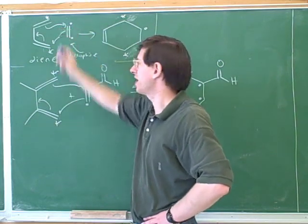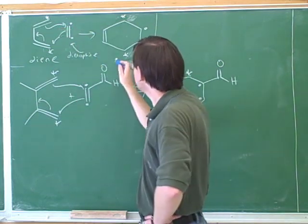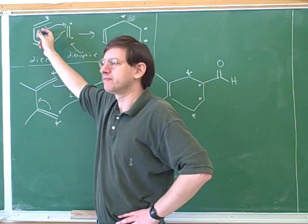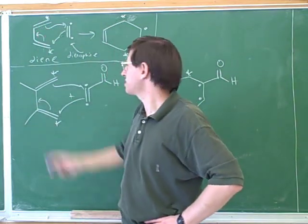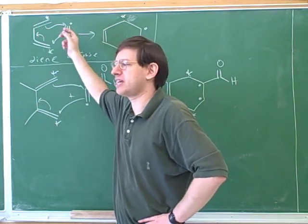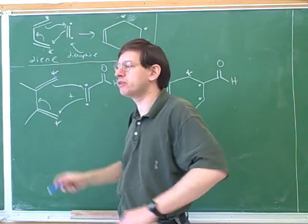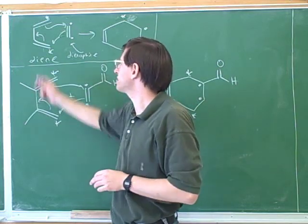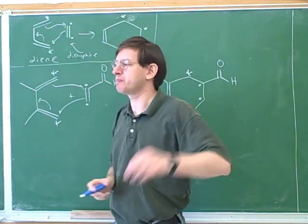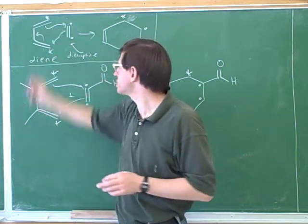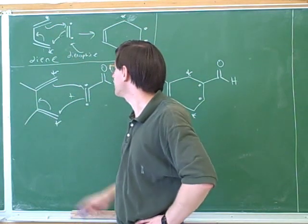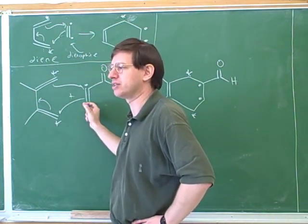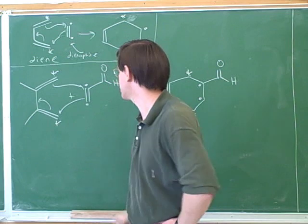We can simply draw the same mechanism we had up here. I'm going to leave this on the board because this is our model for the Diels-Alder. You're never going to see a question as easy as this on the test, but if you're doing a really hard question, one of the best things you can do is just write down your model and then try to match up the parts of the hard question to your model. In particular, try to find where the asterisks and where the dots are in your harder question.